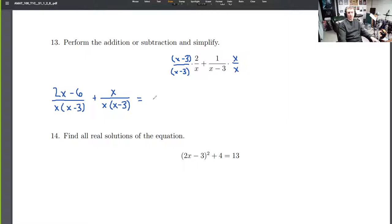So now we're going to do what you do with any two fractions in addition when they have the same denominator. You can write it as one fraction with that denominator, and then you can add the two numerators together. 2x minus 6 plus x. Okay.